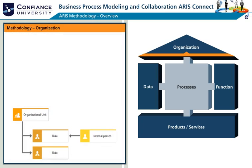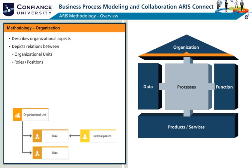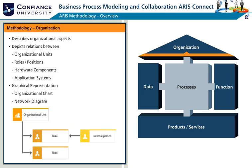The organization view describes organizational aspects. It depicts relations between organizational units, roles, and positions. It can also depict relations from organizational elements to system elements. Some of the typically used graphical representations are the model types: organizational chart and network diagram.